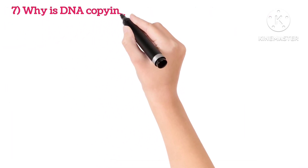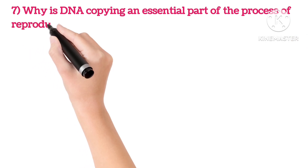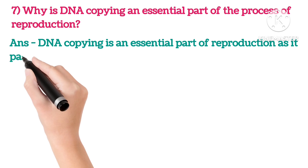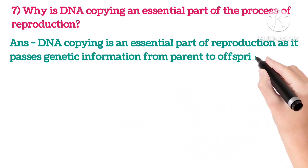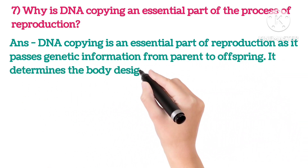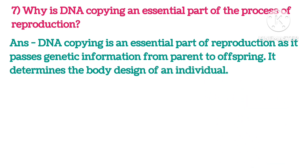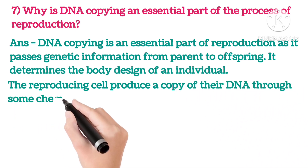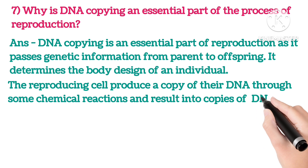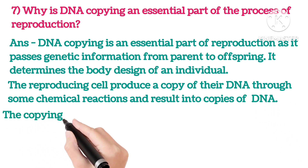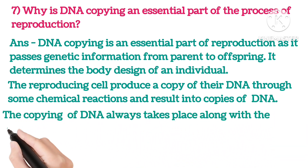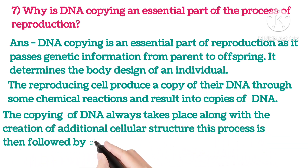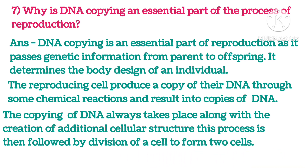Seventh: Why is DNA copying an essential part of the process of reproduction? DNA copying is essential for reproduction as it passes genetic information from parent to offspring and determines the body design of an individual. The reproducing cells produce a copy of their DNA through chemical reactions. The copying of DNA always takes place along with the creation of additional cellular structure, followed by division of the cell to form two cells.